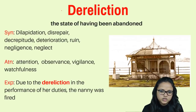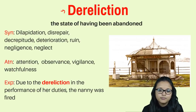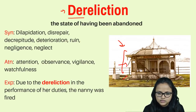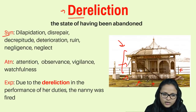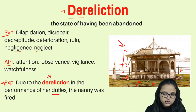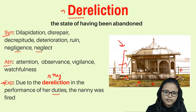The fourth word is 'dereliction.' Dereliction is when something is entirely ignored — nobody is paying attention — and that is why that place or person is abandoned. Dereliction means the state of being abandoned. For example, this structure shown is totally abandoned; nobody is living here and nobody is alert or aware about this place, so it has broken down. Synonyms are dilapidation, disrepair, decrepitude, deterioration, ruin, and negligence. Antonyms are attention, observance, vigilance, and watchfulness. Example: 'Due to dereliction in the performance of duty' — meaning negligence — 'the nanny was fired.'